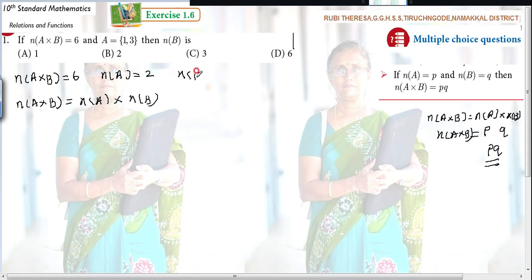What are they asking? n(B) equals... n(A × B) is 6, they have given. n(A) from this you found out is 2. Then n(B) you have to find it out. Therefore, n(B) equals 6 divided by 2. 2 × 3 is 6. So n(B) equals 3.